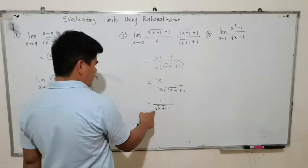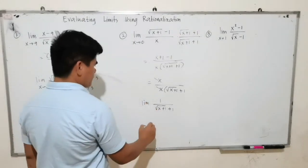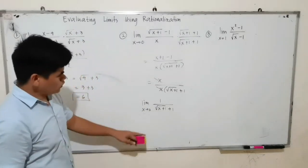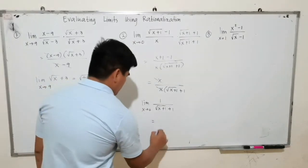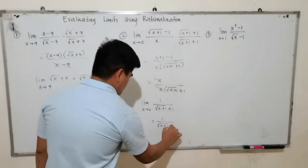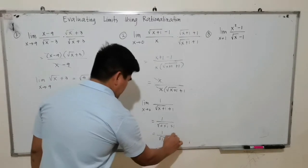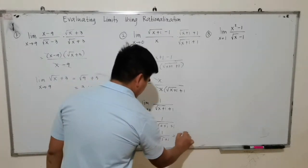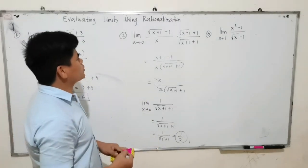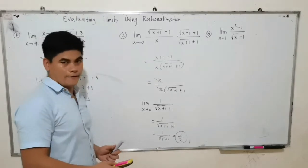What is left is 1 over square root of x plus 1 plus 1. The limit of 1 over square root of x plus 1 plus 1 as x approaches 0 — substituting 0 gives 1 over square root of 0 plus 1 plus 1, which is 1 over square root of 1 plus 1, or 1 over 2. Therefore, the limit of (square root of x plus 1 minus 1) over x as x approaches 0 is 1 half.